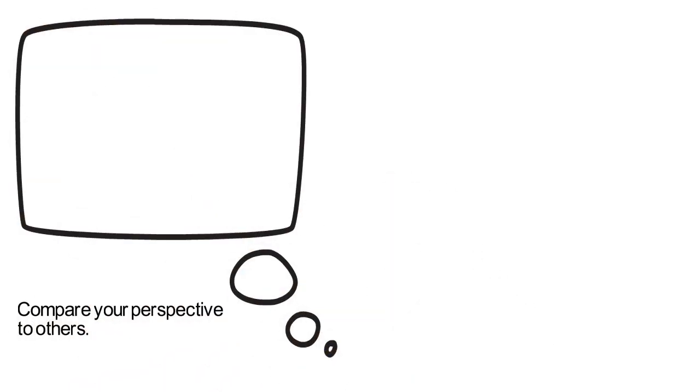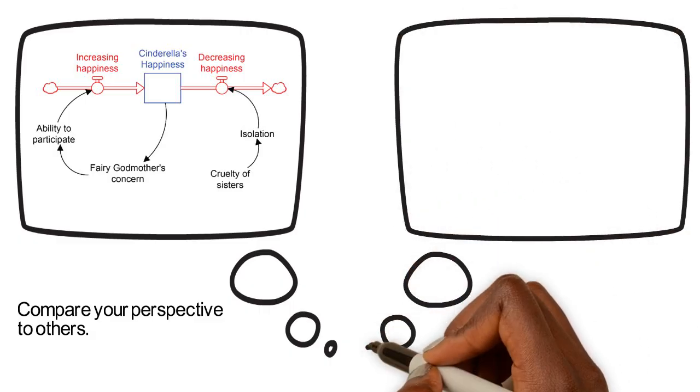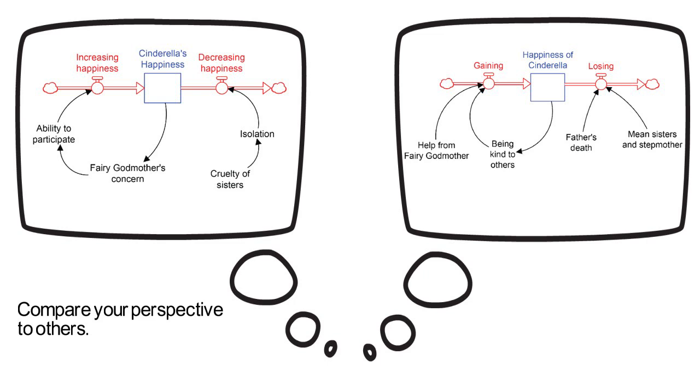For example, seeing how the same systems can be perceived in different ways. Here are diagrams showing how two people perceive the same literary character's level of happiness. Now they can talk about why they see the system differently, creating a possibility for one or both parties to refine their own thinking.